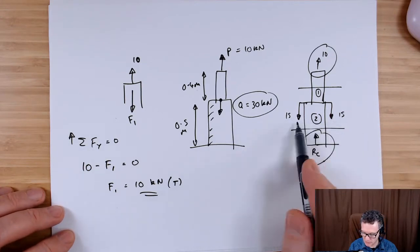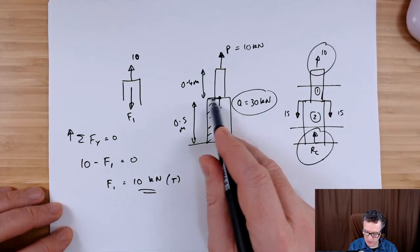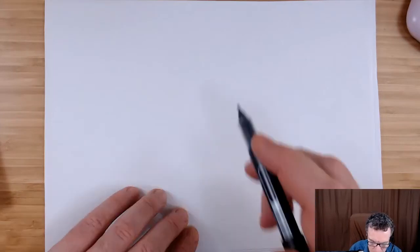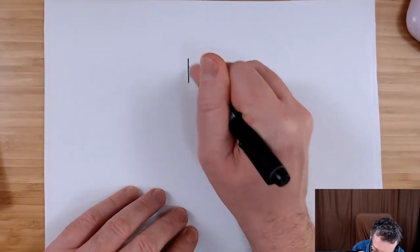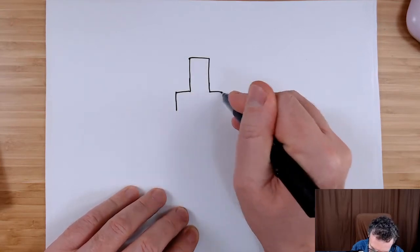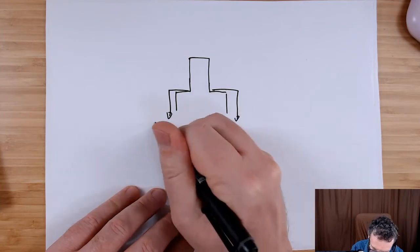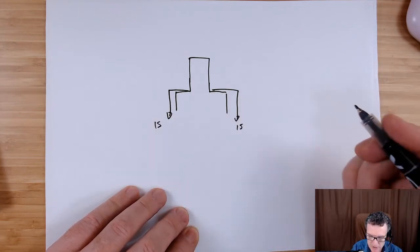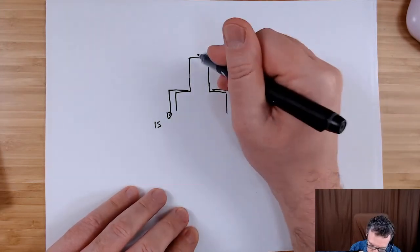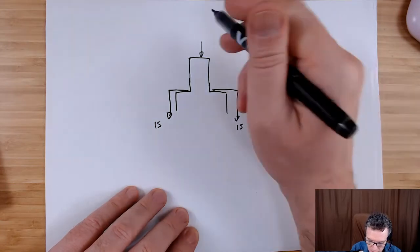Now we want to find the internal force on section two. Notice I've taken the 30 kilonewtons and split it into 15 and 15 to represent the fact that we've got some kind of flange with a uniform force being applied over this section. So we need to draw another free body diagram — the top section, the bottom section, and then 15 and 15 as external forces. Added together we've got the full 30. The reason I'm doing this is so I can put these forces outside of my body.